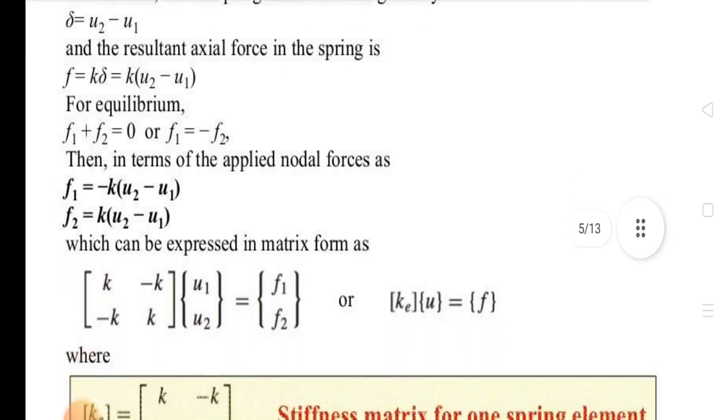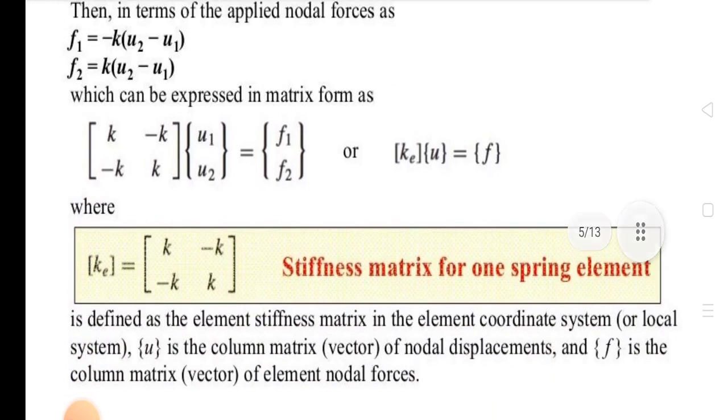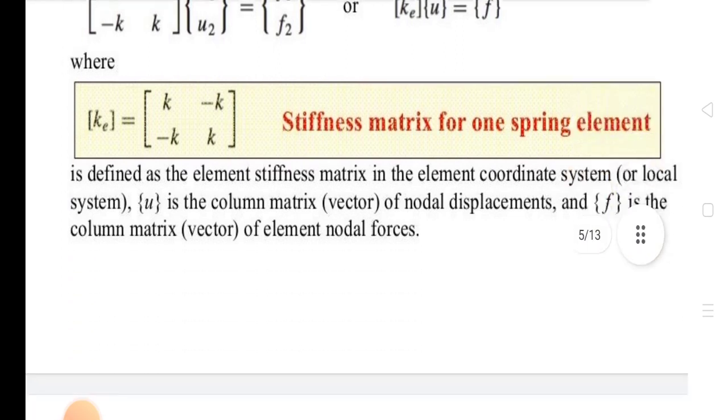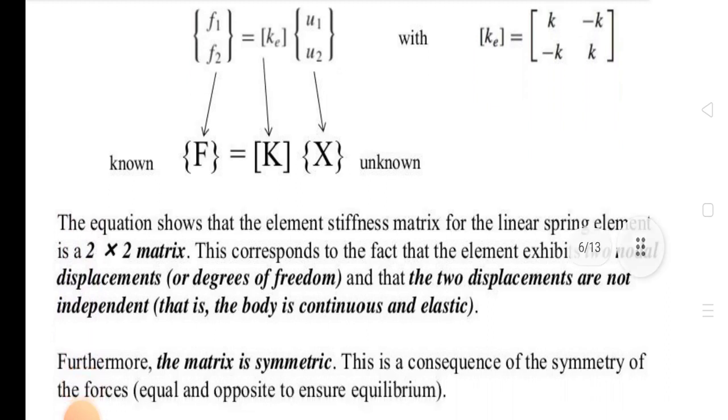This is the equation K^e times U equals F. This is the stiffness matrix. K^e equals [[K, -K], [-K, K]]. This is the stiffness matrix for one spring element. This is F equals K times X. This is unknown. 2 by 2 matrix. Two nodal displacements are degrees of freedom. And the two displacements are not independent. That is the body is continuous and elastic. Therefore, the matrix is symmetric.